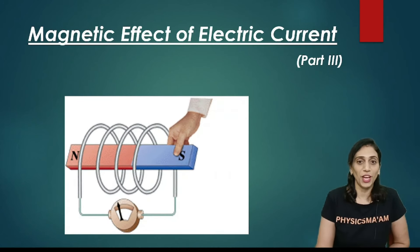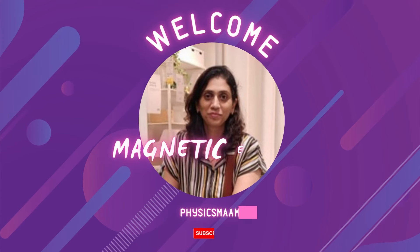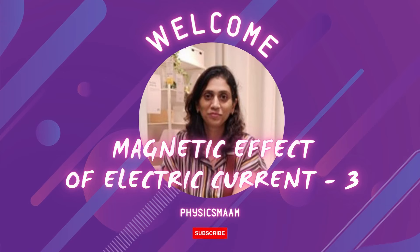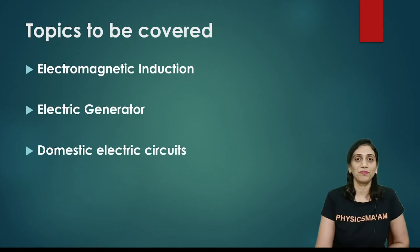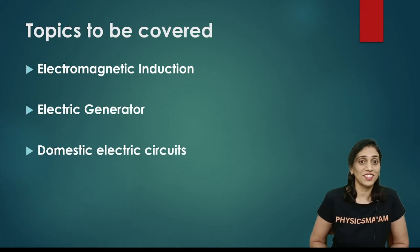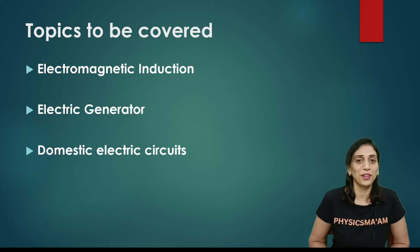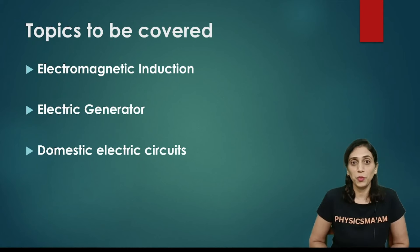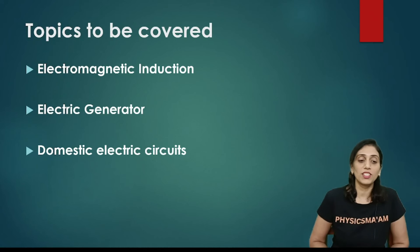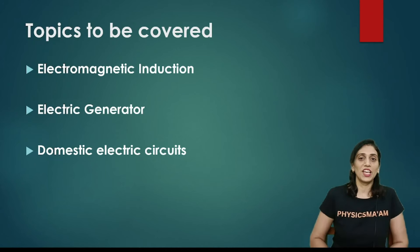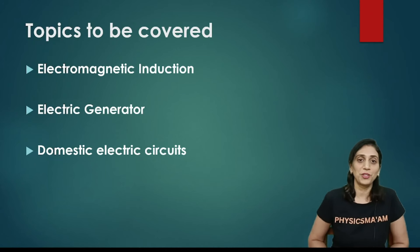This is part three of the chapter series. The topics that I'm going to cover in this video are electromagnetic induction — yes, the cooktop, but we'll not be talking about the cooktop anymore — then the electric generator and its working principle, then what are the domestic electric circuits and how are they designed. So let us start and go ahead to the topic directly.